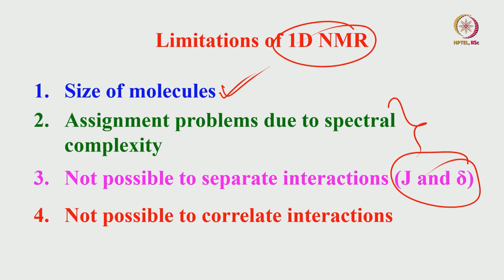Another issue is that you cannot correlate the interactions. For example, if I want to say the CH3 proton is coupled to CH2 — how did I understand that? Based on the multiplicity. I know CH3 is a triplet because of CH2, and CH2 is a quartet because of CH3. But if there is enormous complexity in the spectrum, how do you even extract the multiplicity pattern and do the correlation? If one proton is coupled to several other protons in different groups with overlap everywhere, which is coupled to which becomes very difficult to correlate.